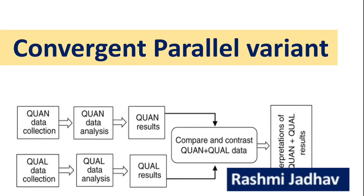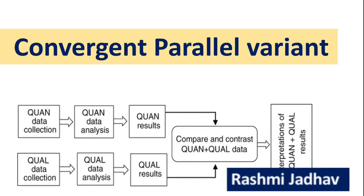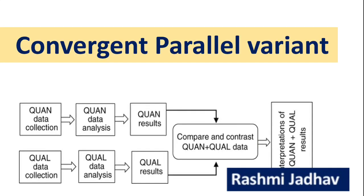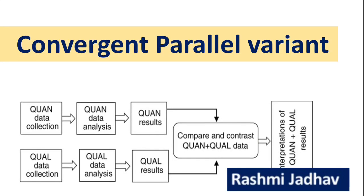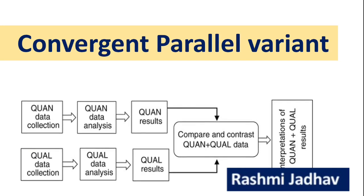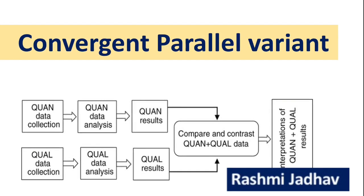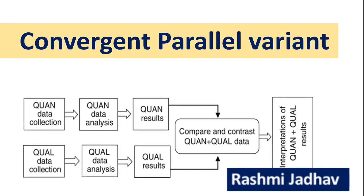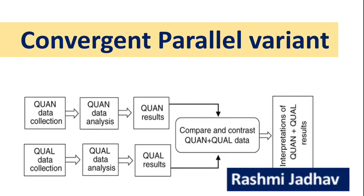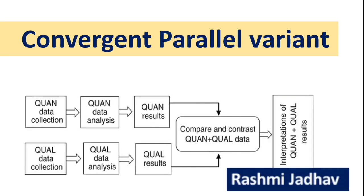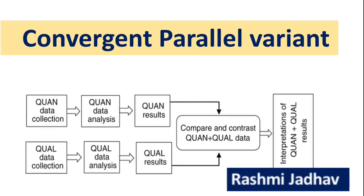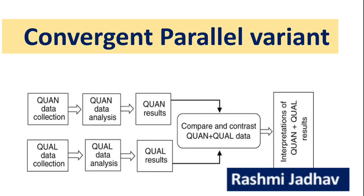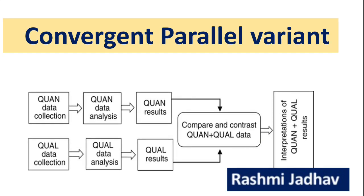In convergent design, we can see three variants. First is the convergent parallel variant, where we collect both types of data separately, perform data analysis separately, see the quantitative and qualitative results, and at last compare both types of data for our final interpretation and analysis.